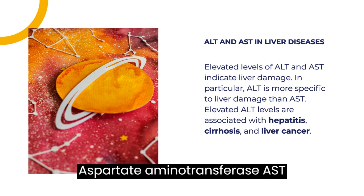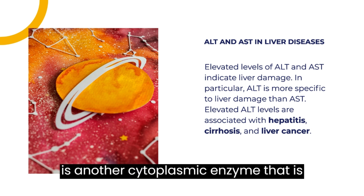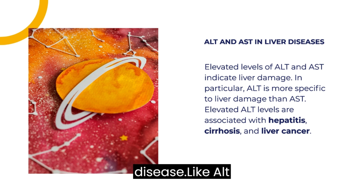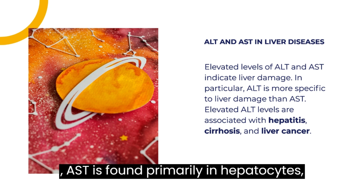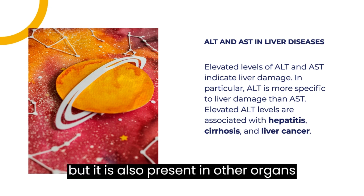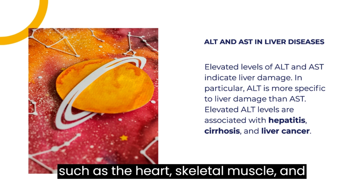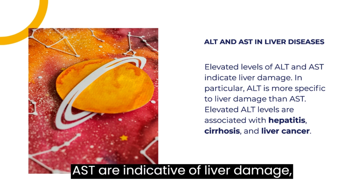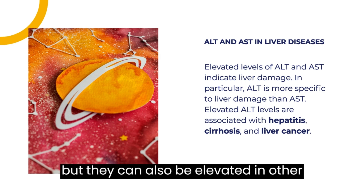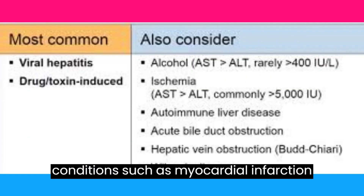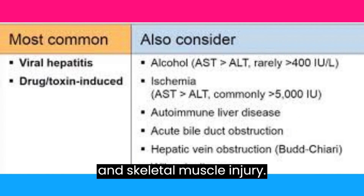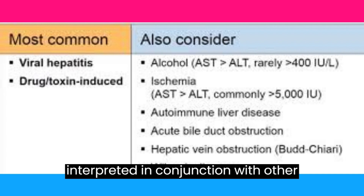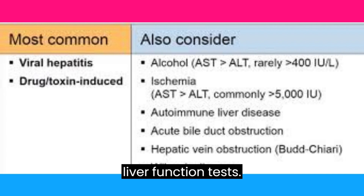Aspartate aminotransferase (AST) is a cytoplasmic enzyme used as a diagnostic marker for liver disease. Like ALT, AST is found primarily in hepatocytes, but it is also present in other organs such as the heart, skeletal muscle, and kidneys. Elevated levels of AST are indicative of liver damage, but they can also be elevated in other conditions such as myocardial infarction and skeletal muscle injury. Therefore, AST levels should always be interpreted in conjunction with other liver function tests.